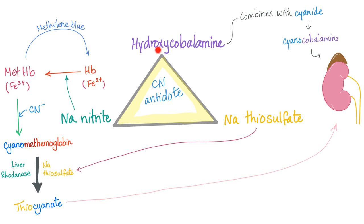The complete triad mechanism: sodium nitrite converts hemoglobin (ferrous) into methemoglobin (ferric). Cyanide loves ferric, so methemoglobin binds cyanide forming cyanomethemoglobin. Rhodanese plus sodium thiosulfate convert cyanomethemoglobin into thiocyanate, excreted in urine. Hydroxycobalamin, on the other hand, combines directly with cyanide forming cyanocobalamin, which is also excreted in the urine.